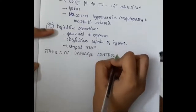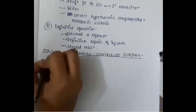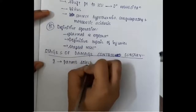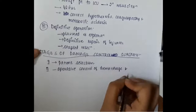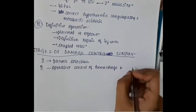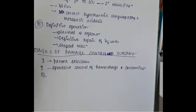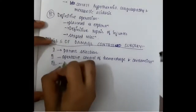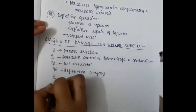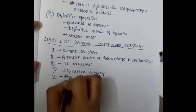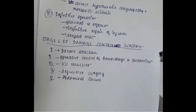The stages of damage controlled surgery are five in total. Stage 1: patient selection. Stage 2: operative control of hemorrhage and contamination. Stage 3: ICU resuscitation after control of hemorrhage and contamination. Stage 4: definitive surgery. Stage 5: abdominal closure. These are the steps of damage controlled surgery.